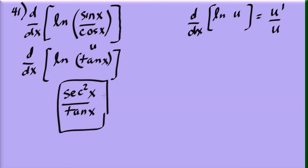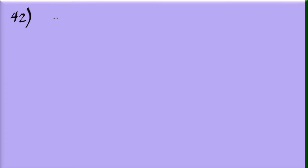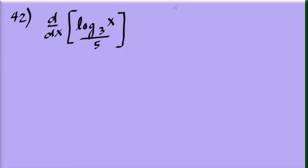Now let's look at how to differentiate a regular logarithm — say, the logarithm of x to base 3, over 5. The formula for the derivative of log base b of u is: u prime over (u times ln b). Compare this to the natural log formula u prime over u: the difference is the extra ln b in the denominator.